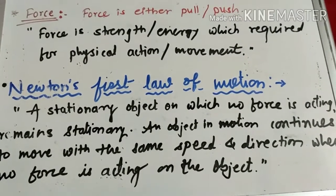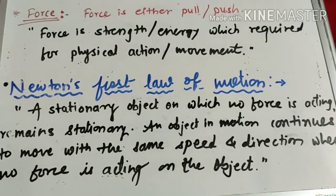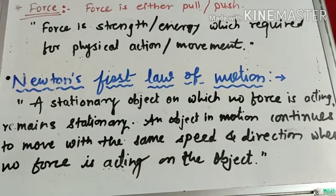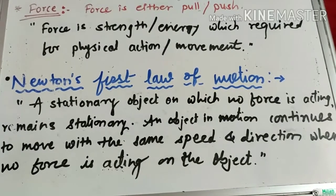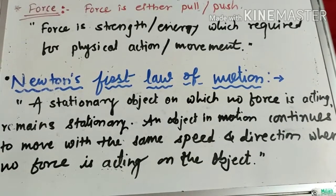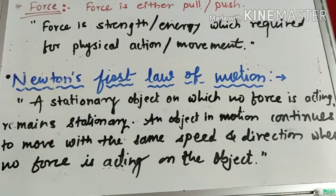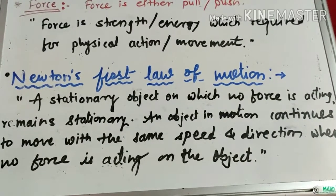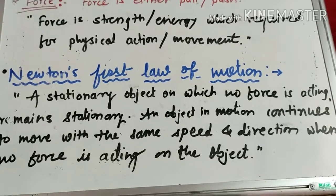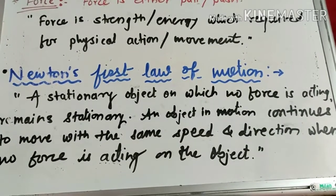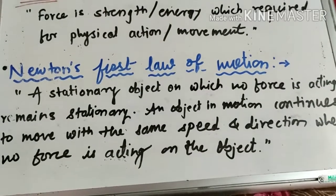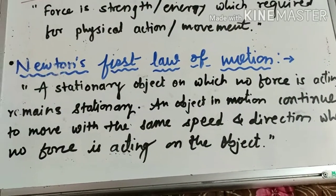So this is about Newton's first law of motion. A stationary object on which no force is acting remains stationary, and an object in motion continues to move with the same speed and same direction when no force is acting on the object. This is the statement of the first law of motion.